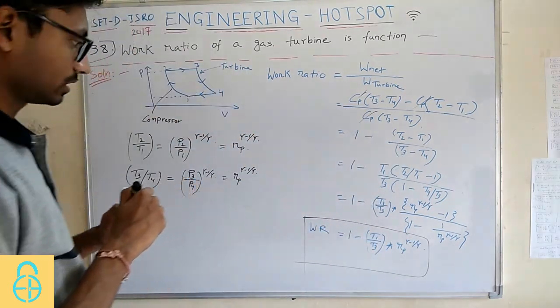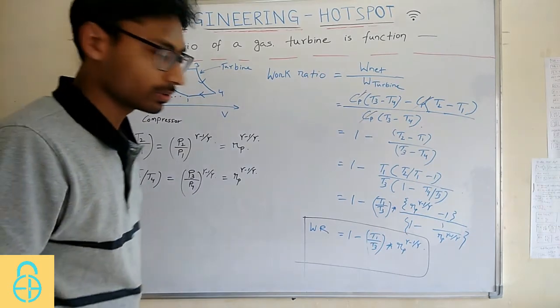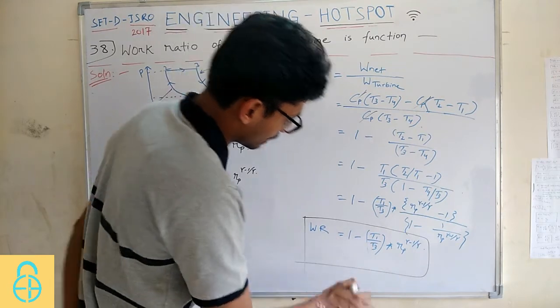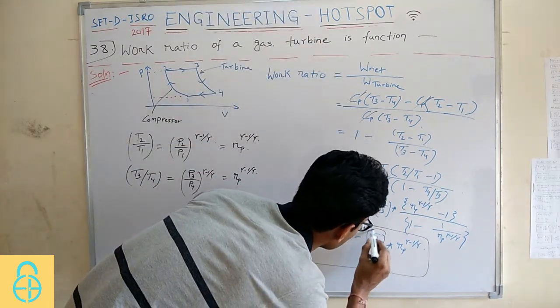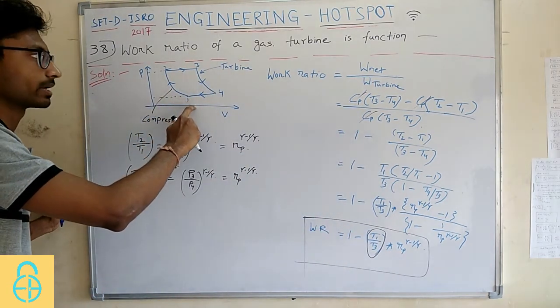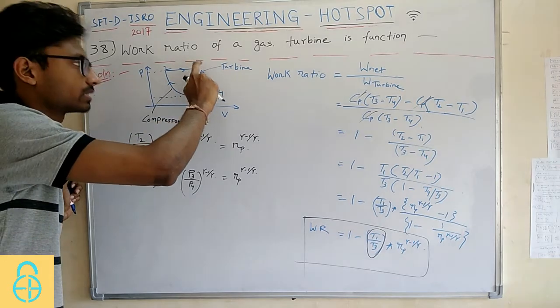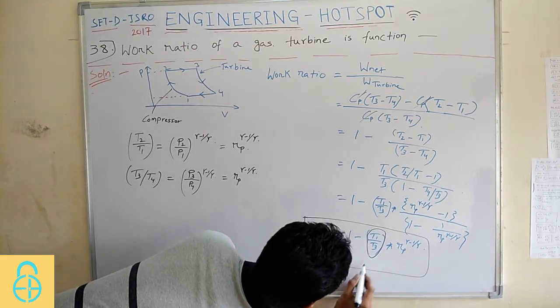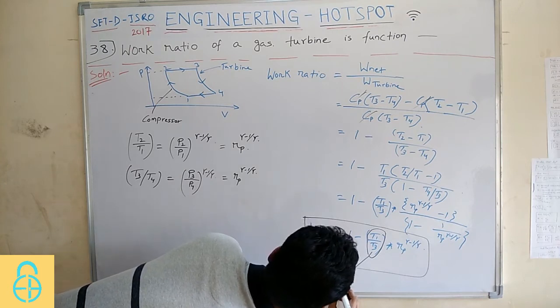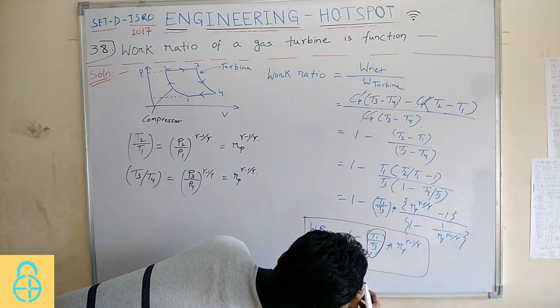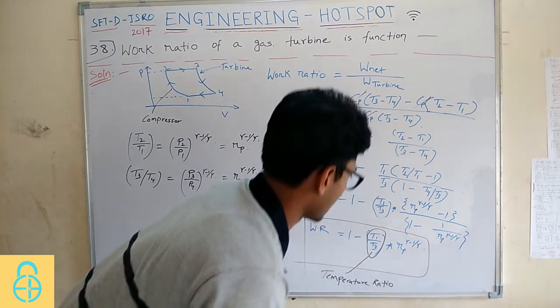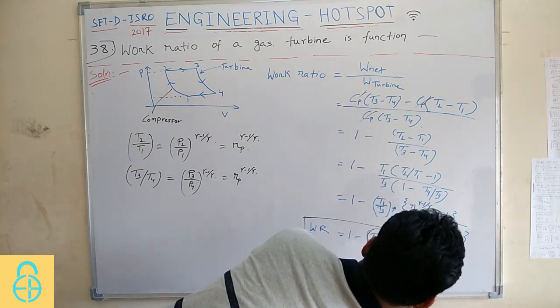If you observe this expression, you will get to know that it depends on T1, T3. This T1 by T3 is basically called the temperature ratio because T1 is the lowest temperature in the gas turbine and T3 is the maximum temperature in the gas turbine. So it is also called temperature ratio.